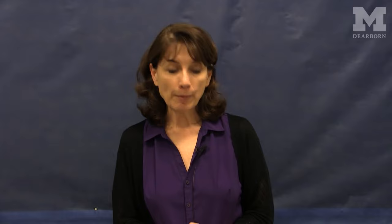So I've mentioned just four sub-areas within industrial organizational psychology: selection and placement, performance management, organizational behavior, and quality of work life. There are many other sub-areas too — I just chose four to highlight.